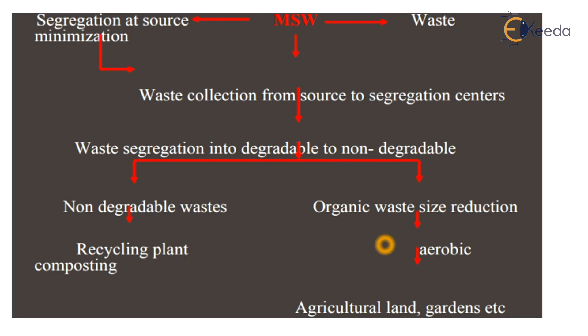Passing through collection from the source to the segregation center, different types of waste are segregated — non-degradable and degradable waste are separated, as well as organic and inorganic material. Some types of waste are reusable and recyclable, so that waste is also separated out and reused or recycled.